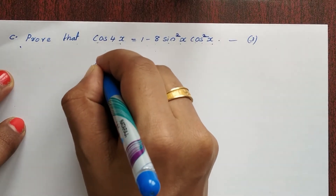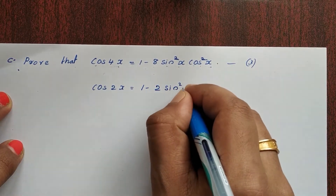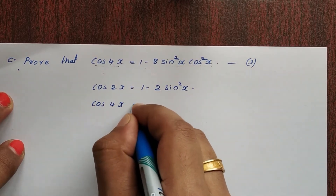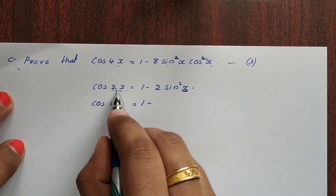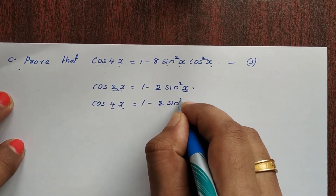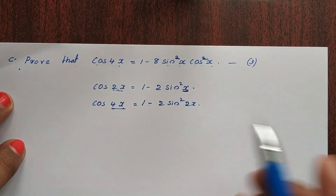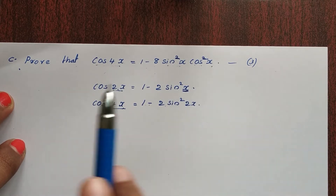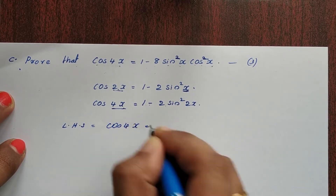We have to write the formula. cos 4x — the result is in terms of 2x. Because you have 2x, that is cos 4x equals 1 minus 2 sin² 2x. LHS is equal to cos 4x, which equals 1 minus 2 sin² 2x.